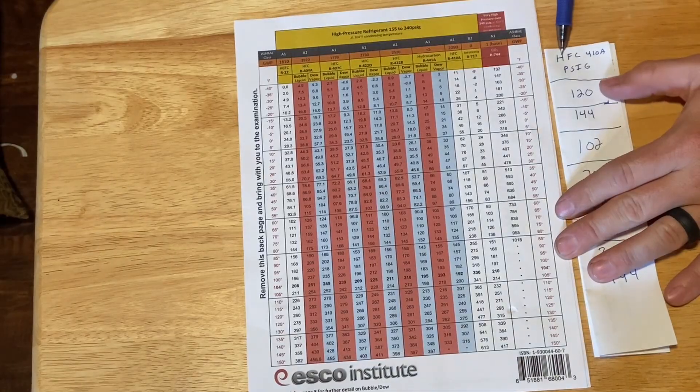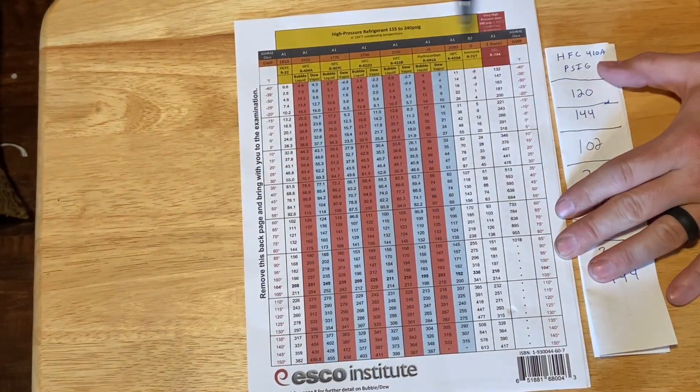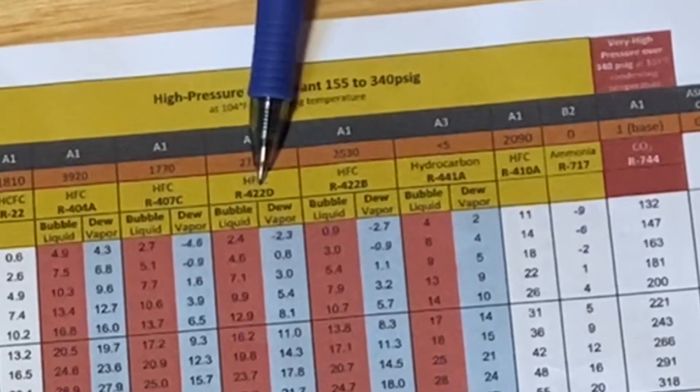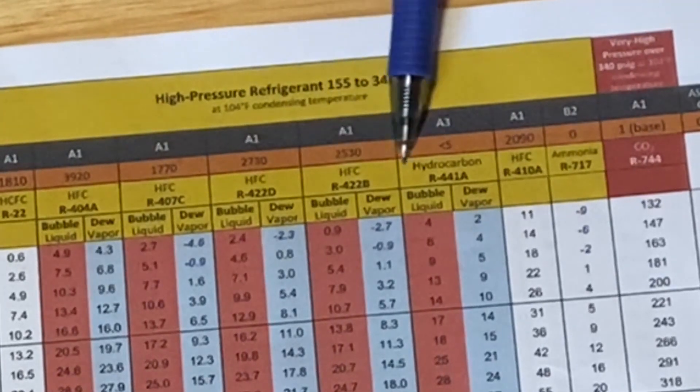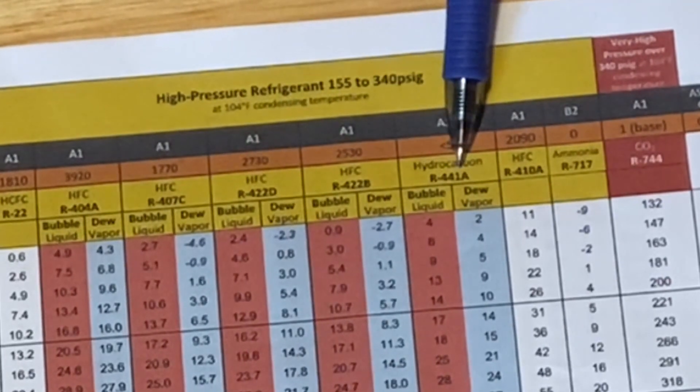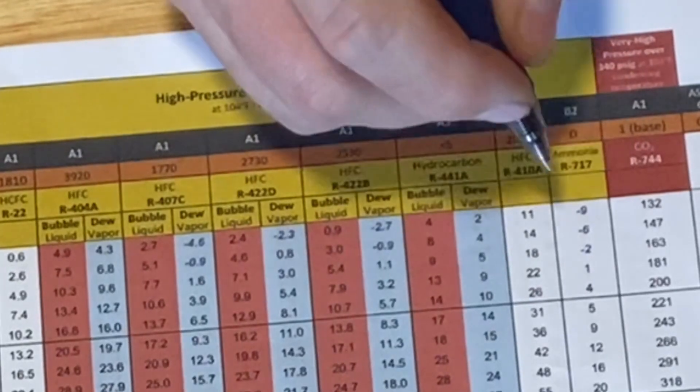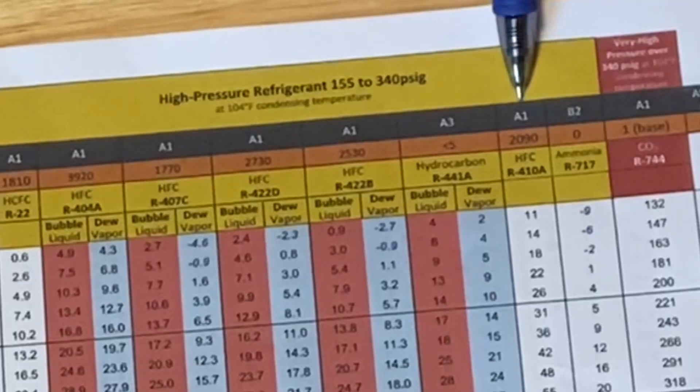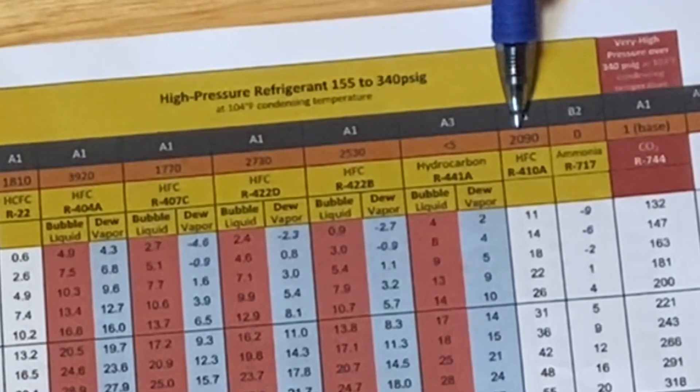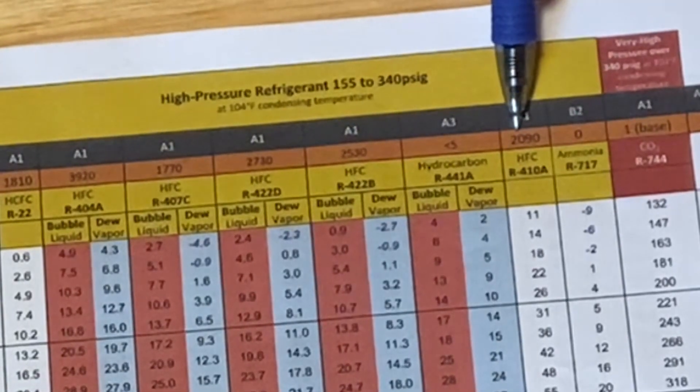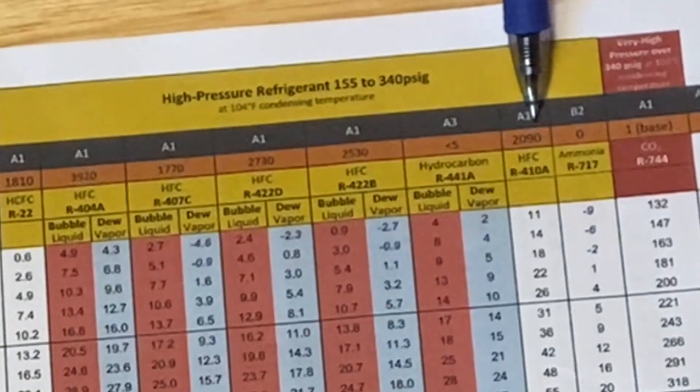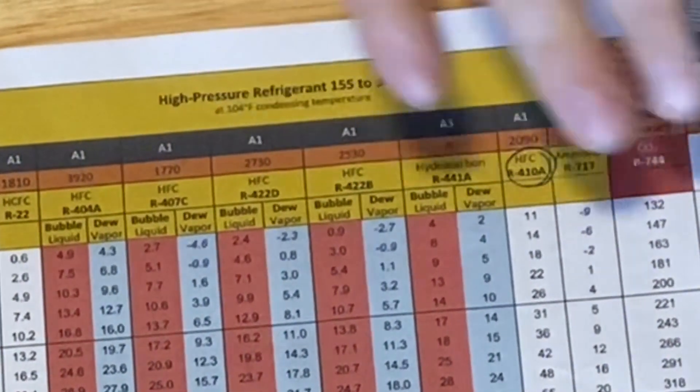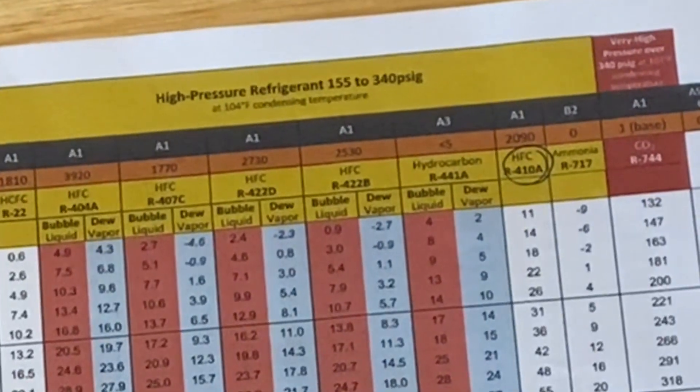Okay we're gonna work these together. So we'll start out with HFC 410A. So we're gonna look on our chart. Here's 22, 404A, 407, 422D, 422B, R441A, and here we go. This is what we're looking for in HFC R410A. It tells us it's an A1 refrigerant, global warming potential of 2,090 times greater than CO2. We'll get to those later but we're gonna circle this so we know that this is the line that we're looking for.